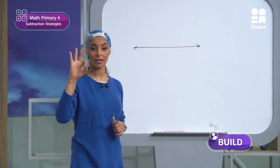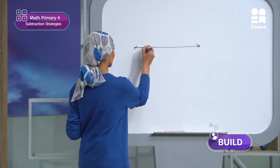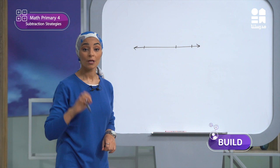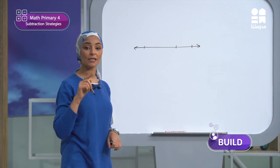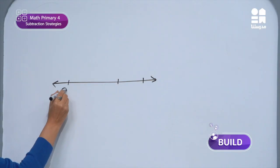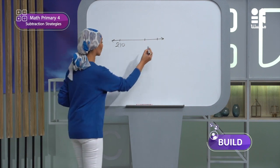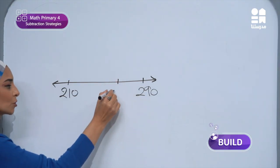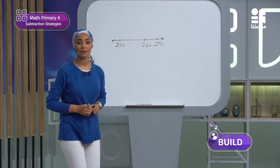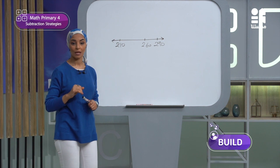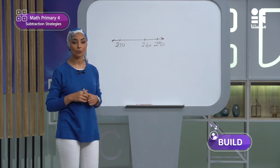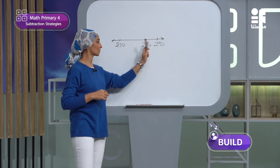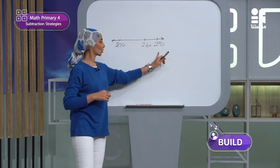We also have an open number line — not labeled, only with three dots. We need to replace them with the three numbers: 210, 260, and 290. The smallest number goes here on the left, the biggest number here on the right. The middle number, 260, is closer to 290.